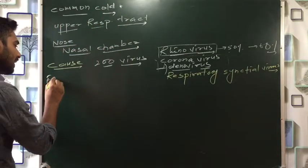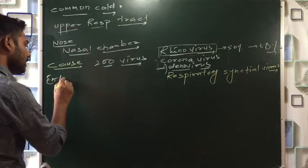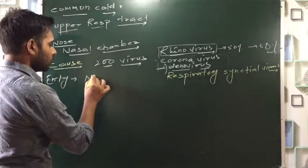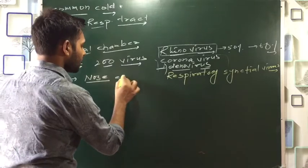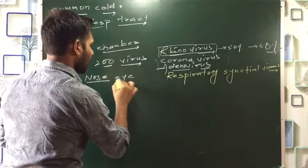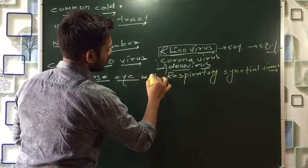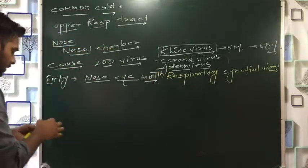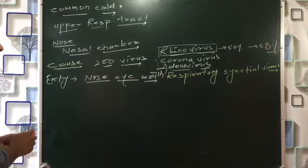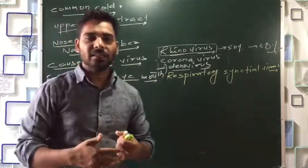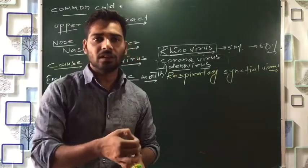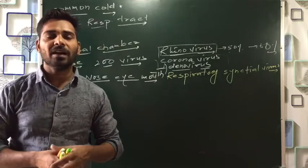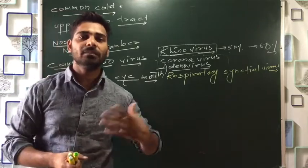The virus spreads from one person to another person. The entry points into your body are your nose, eye, and mouth. This is where your body is entered. Once the virus enters your body, it multiplies.